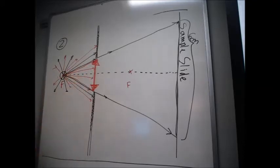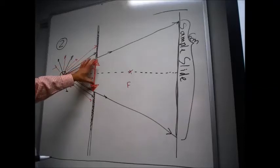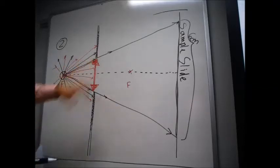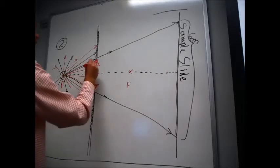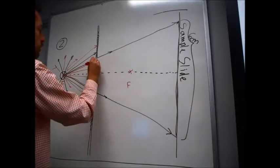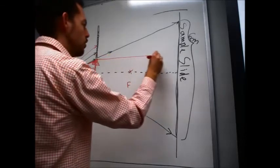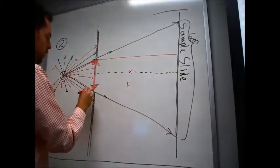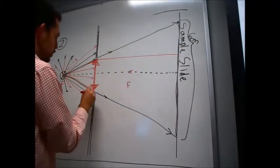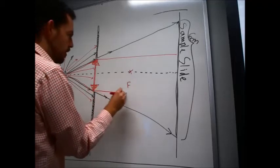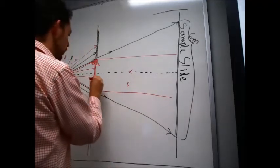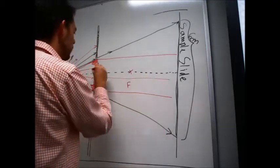Now remember what we said: if you have light beams originating from a focal point of a converging lens, they spread out, hit the lens, now they get the direction changed, and they'll now travel parallel to the optical axis. So this one just hits the top, now travel parallel to the optical axis. Again, do the same thing.